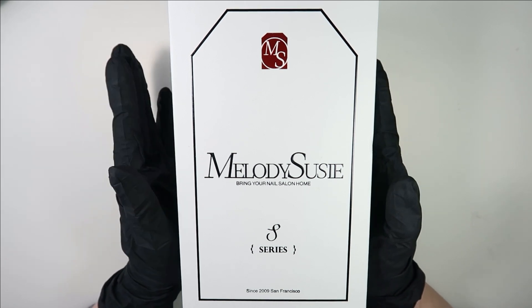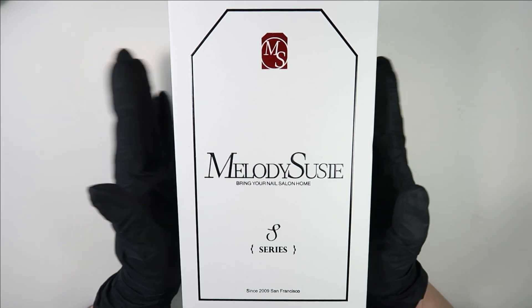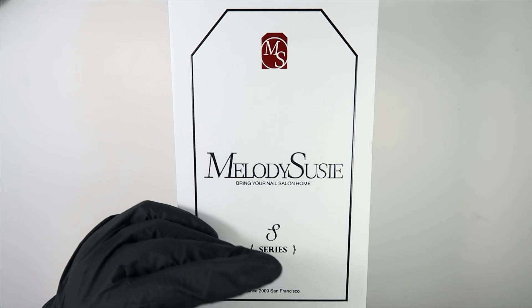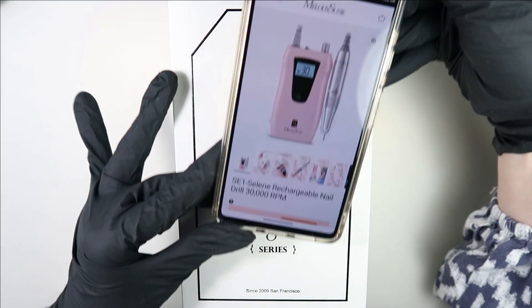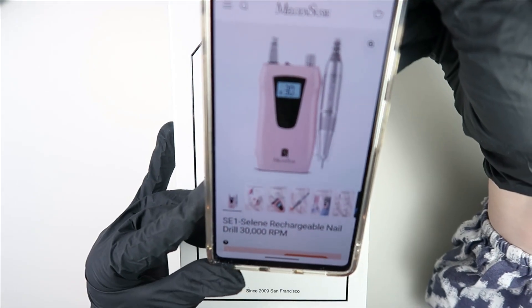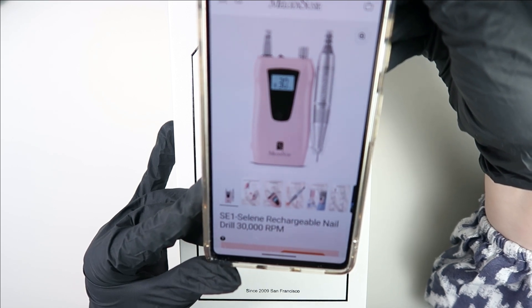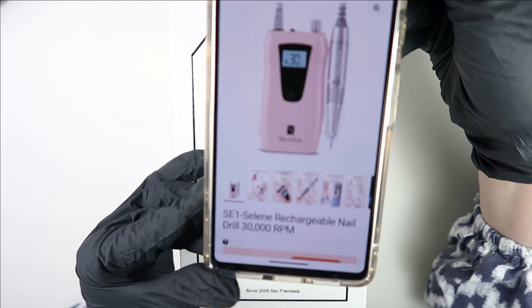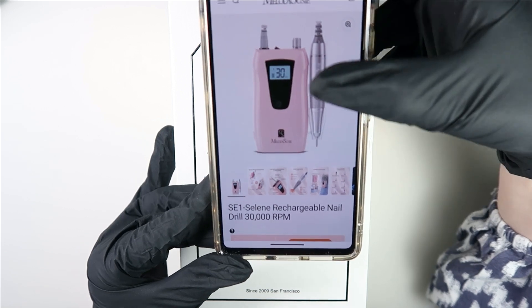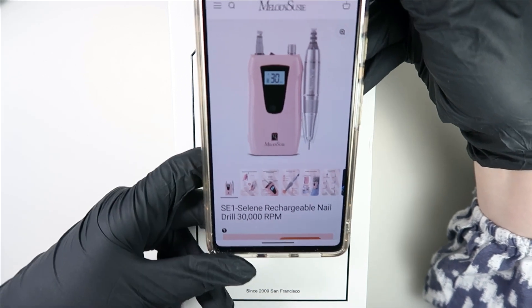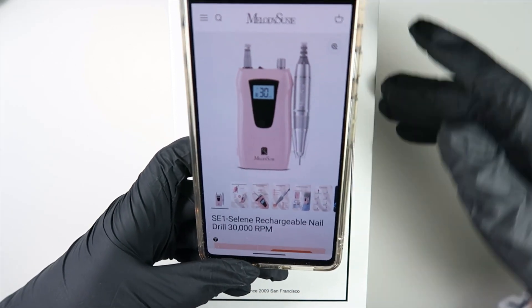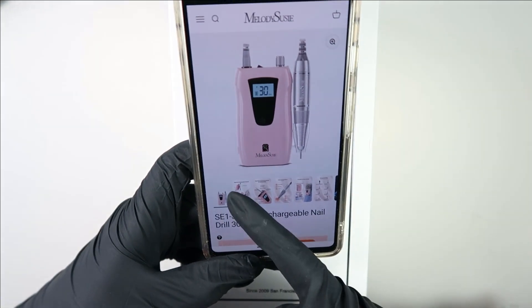This is their nail drill machine which is rechargeable. I just pulled up on their website. This is the one they have given me—it's SE1 Selene rechargeable nail drill, 30,000 RPM. This is the cute pink one, but I didn't get this color. I got a black one.